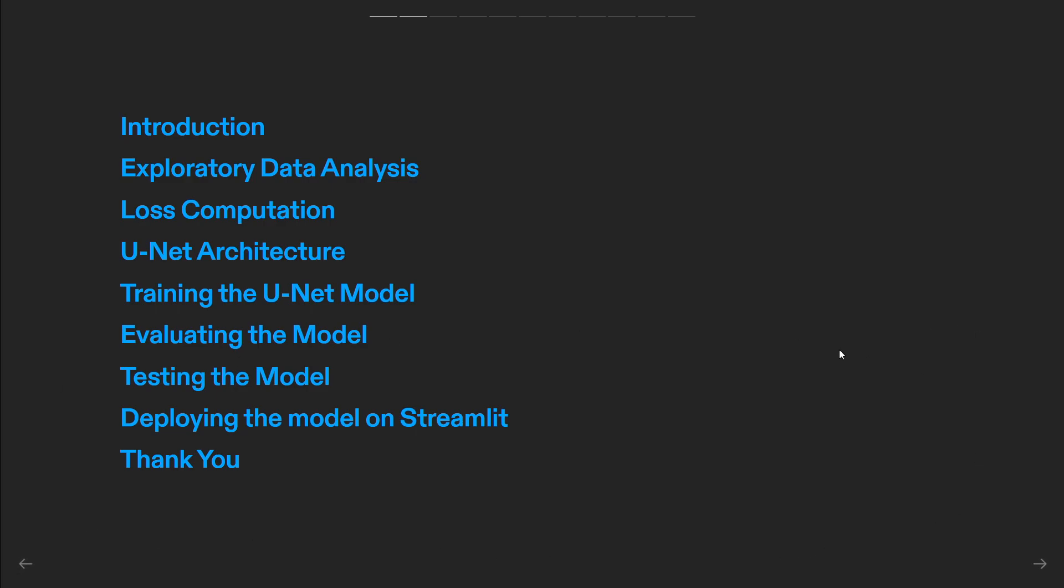Let's briefly outline the topics we'll cover in this tutorial to give you an idea of what to expect. We'll start by understanding the dataset and its characteristics, which are vital for successful segmentation. We'll explore different brain regions labeled within the dataset and discuss strategies for data preprocessing, quality control, and cleaning. Next, we'll delve into the U-Net architecture as well as the loss computation, a powerful framework specifically designed for medical image segmentation.